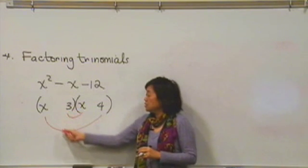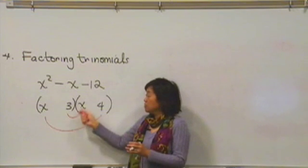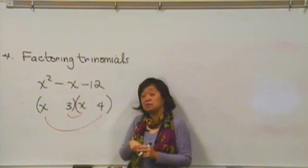my outside ones give me 4x and my inside ones give me 3x. I could take a 4x and 3x and by messing with the signs, make them produce a negative 1.